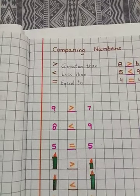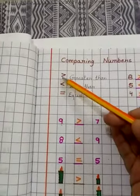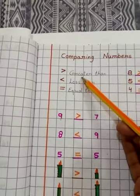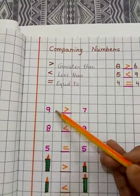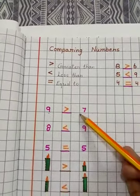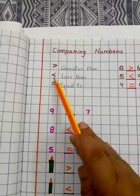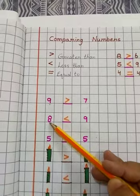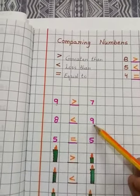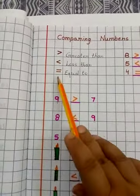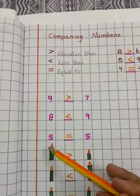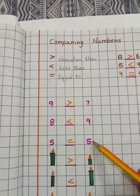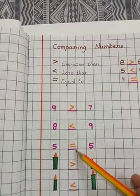So remember. First, this is the sign of greater than. Hum yeh tab use karte hain jab pehla number doosre se bada hota hai. The next one is less than. Yeh hum tab use karte hain jab pehla number doosre se chota hota hai. And the last one is equal to. Is sign ko hum tab use karte hain jab douno number barabar hote hain.